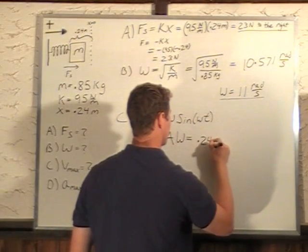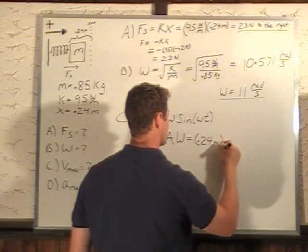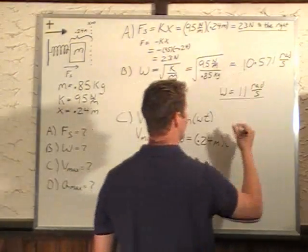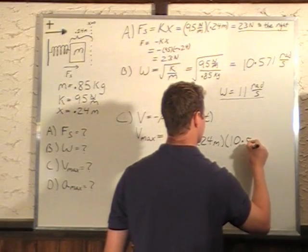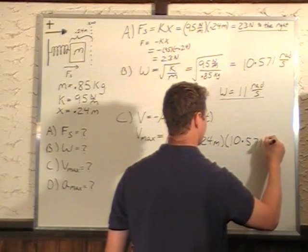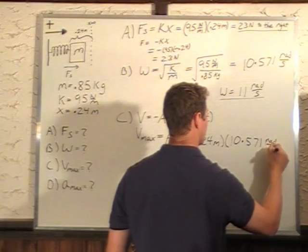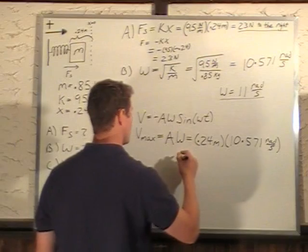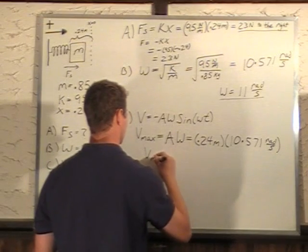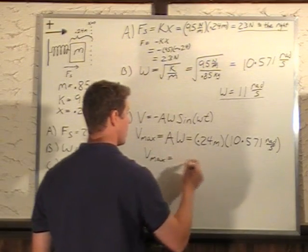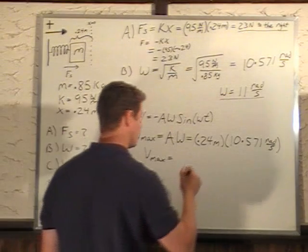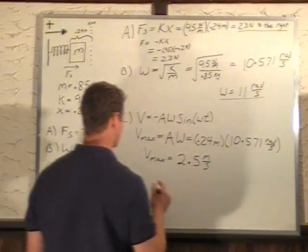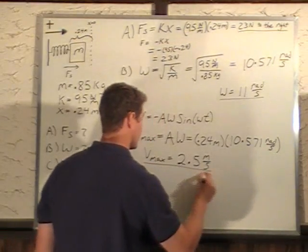0.24 meters times omega of, we've determined to be 11, but we'll put in all our numbers here. Make sure we have an accurate answer. So that gives us a V max multiplying those two of 2.5, this is again rounded, meters per second. So that's the answer for that.